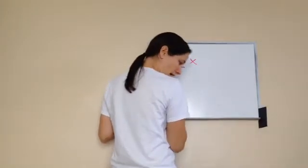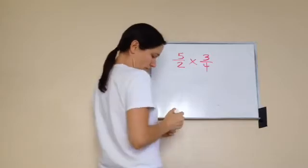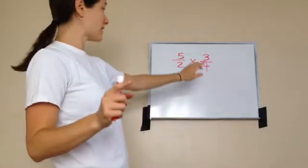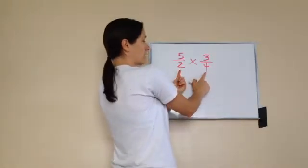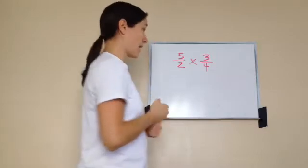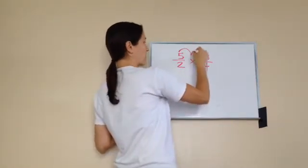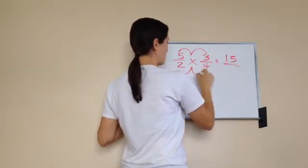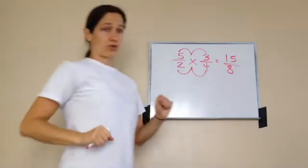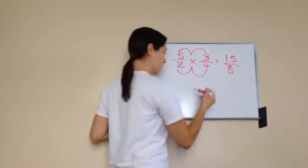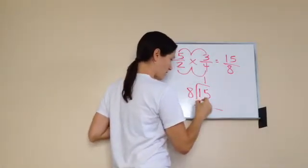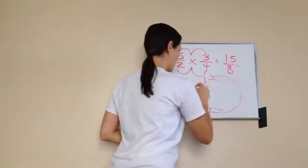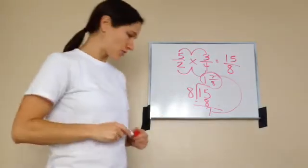Now pay attention — 5 over 2 times 3 fourths, or 5 halves times 3 fourths. The most important thing to realize is that this is multiplication, not adding. So does it matter that these are different denominators? No, it does not. I have to work this problem: 5 times 3 is 15, and 2 times 4 is 8. What's wrong with this answer? It's improper. So 15 divided by 8 — 8 goes into 15 one time, you get 7 left over. Slide it up, 1 and 7 eighths. That's your final answer.